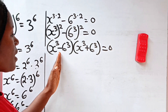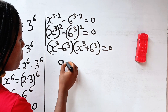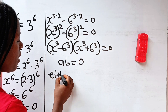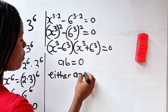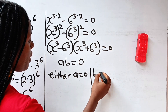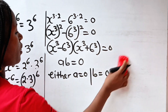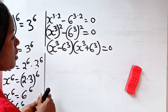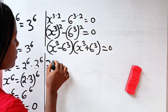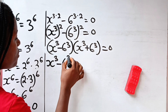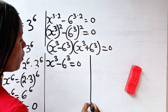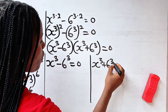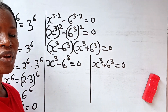Now we can say that when you have a multiplied by b is equal to 0, then either a is equal to 0 or b is equal to 0. So that means either x to the power of 3 minus 6 to the power of 3 is equal to 0, or x to the power of 3 plus 6 to the power of 3 is equal to 0.